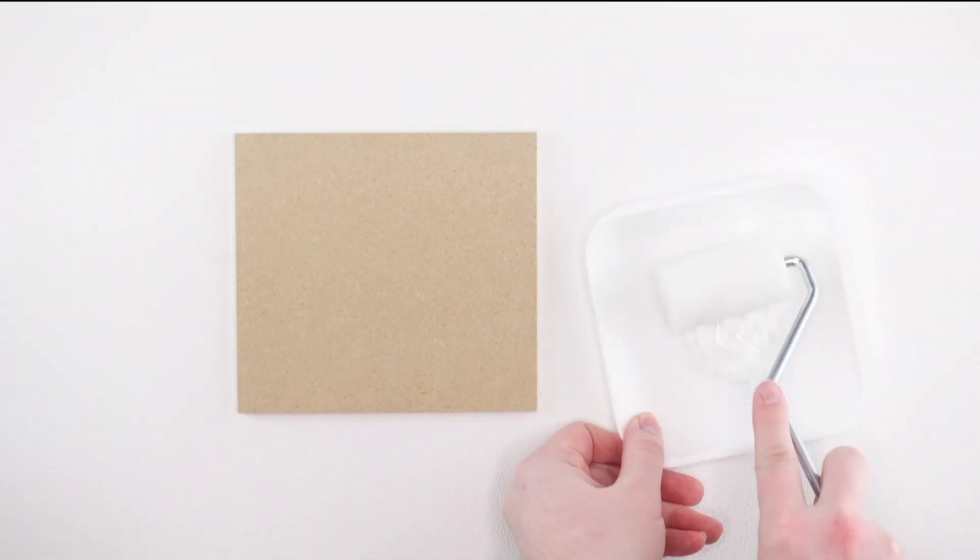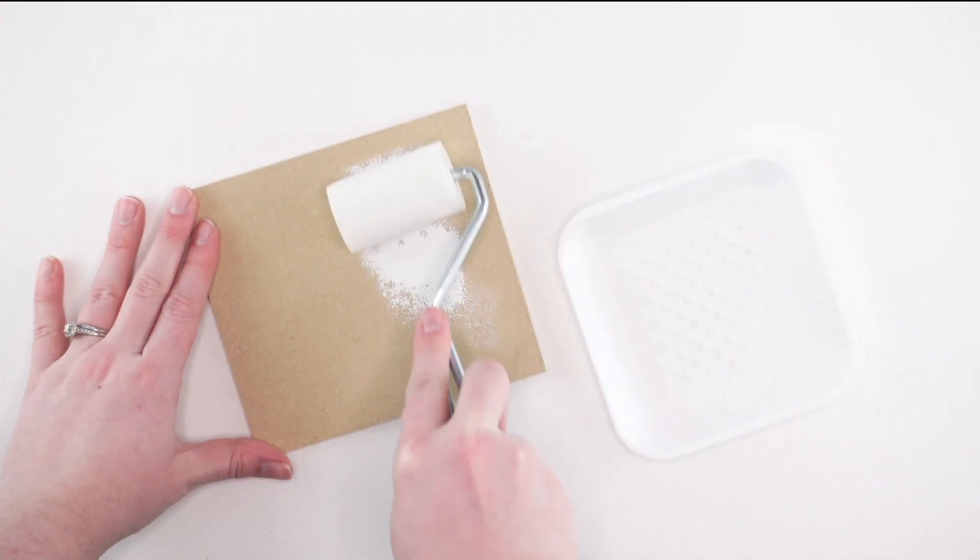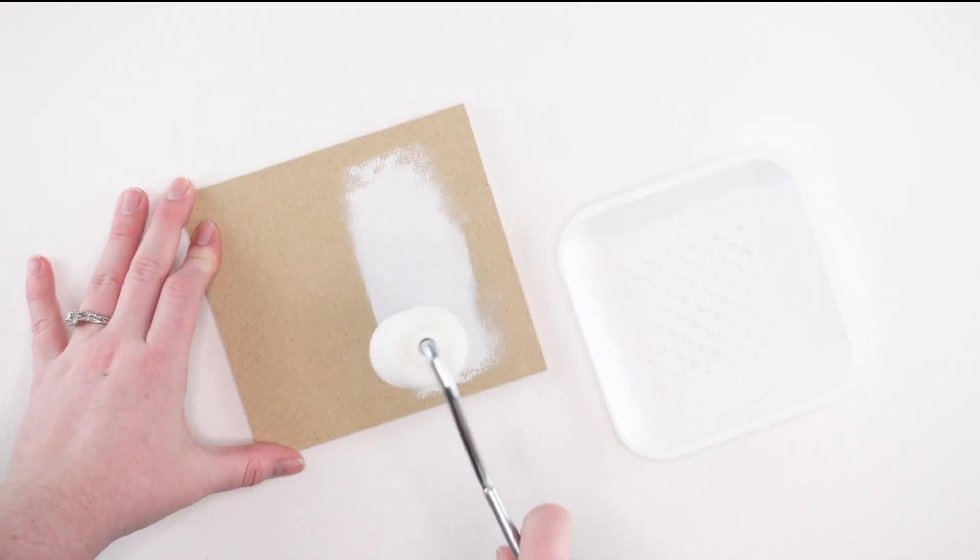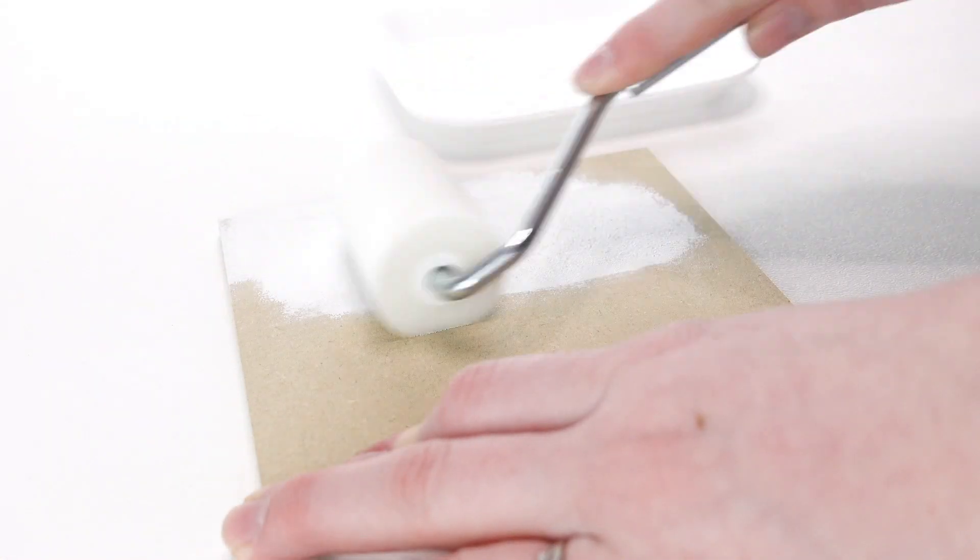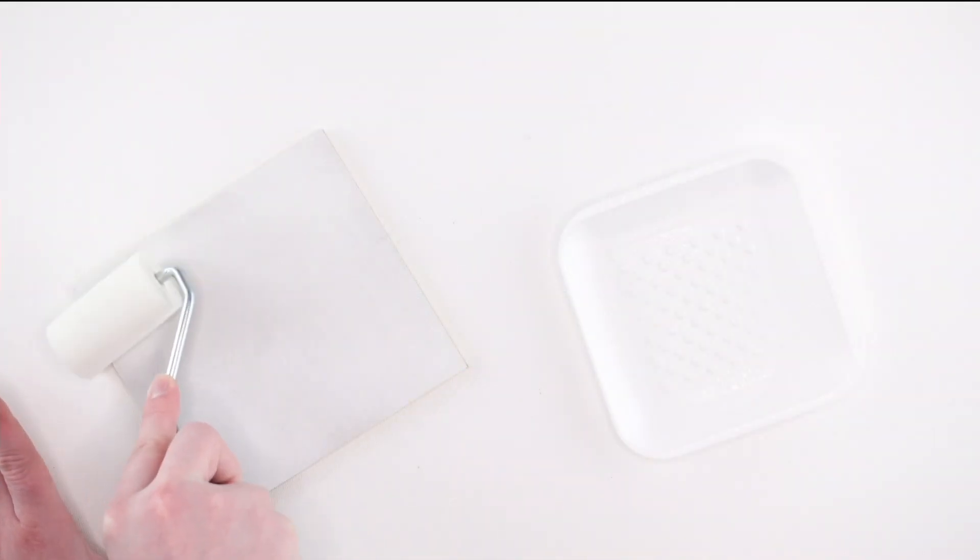For inserts, we prefer to use a roller. This is much quicker for these large surfaces and gives us a slightly smoother finish than the brush. To use the roller, we put some paint onto a tray, load up our roller, and then apply the paint to the whole surface of the insert. Keep in mind we only recommend using the roller on inserts; it's a little too big for the kit pieces. Once the insert is covered, we'll go back over the surface very lightly to remove any lines.